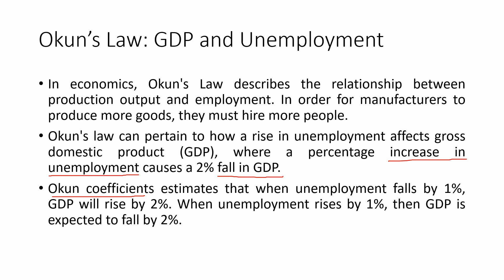We have Okun's coefficients. He actually gave units or percentage units for the rise and fall of GDP and the unemployment rate. When the unemployment rate decreases by 1%, the GDP will rise by 2%. When unemployment increases by 1%, the GDP will fall by 2%. Just remember: GDP is always 2 units, unemployment is always 1 unit.